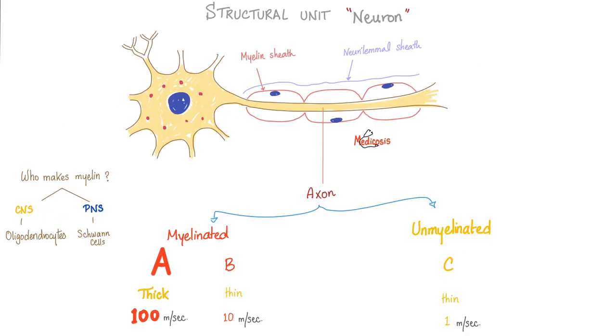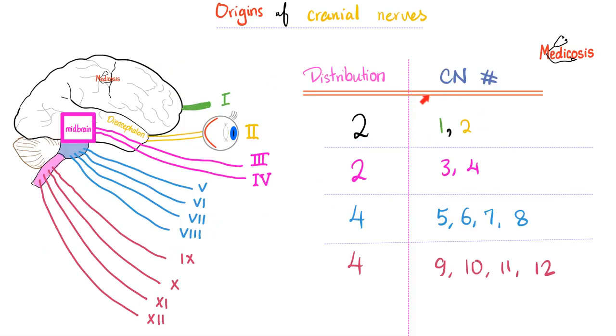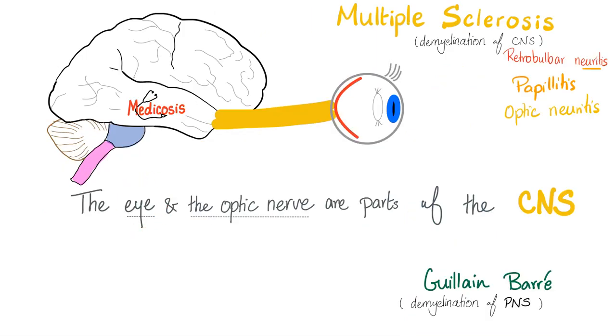Medicine makes so much sense once you understand what you're talking about. This is myelin. Who makes myelin? In the central nervous system, the oligodendrocytes. Don't forget cranial nerves 1 and 2 come from the forebrain. The olfactory comes from the telencephalon, the optic emerges from the diencephalon. Therefore, the eye and optic nerve are parts of the CNS that have bulged forwards during embryology. Multiple sclerosis damages your central nervous system. Therefore, it will damage the optic nerve and retina. You get retrobulbar neuritis, papillitis, or optic neuritis.